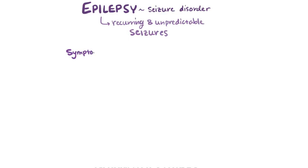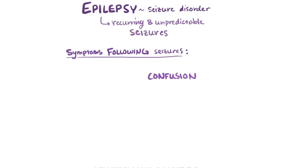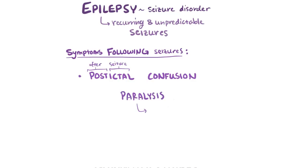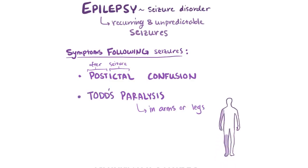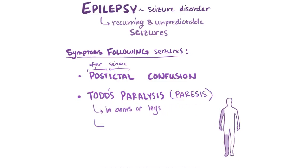Following a seizure, patients sometimes experience certain symptoms like confusion, called post-ictal confusion, which means after-seizure confusion. Patients might also experience paralysis affecting the arms or legs, usually just limited to one side of the body, known as Todd's paralysis or Todd's paresis, which can last on average about 15 hours and usually subsides completely by itself after two days.